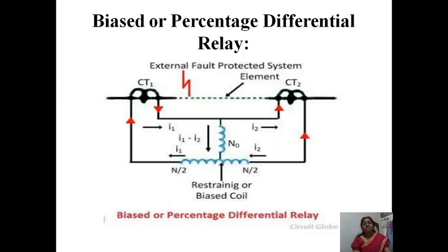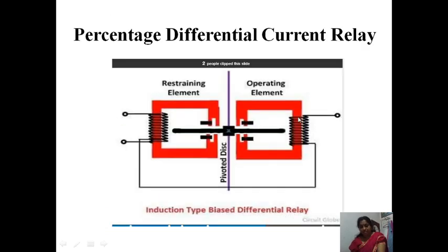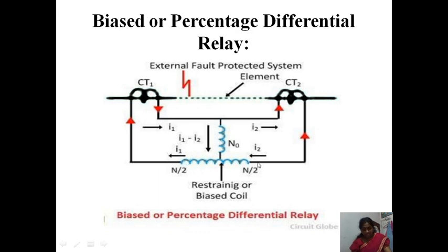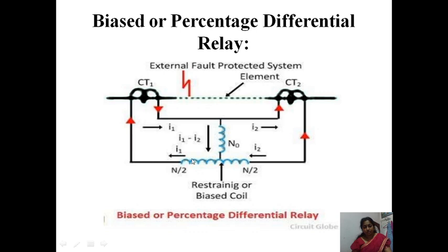This is the induction type bias differential relay. Here you can see the CTs. The operating coil has a single coil, while the restraining coil is divided into two halves — Nr/2 and Nr/2. Nr indicates the restraining coil and N0 indicates the operating coil. The current flows as I1 and I2, giving I2×(N/2) on one side and I1×(N/2) on the other, with I1 minus I2 through the operating element.